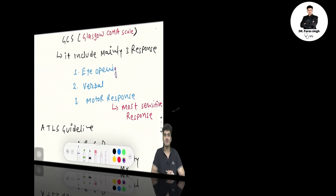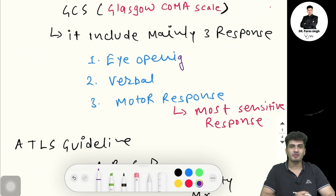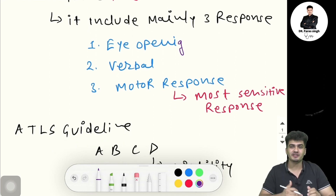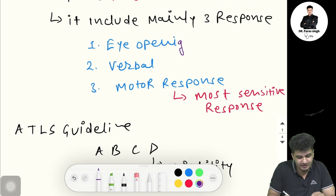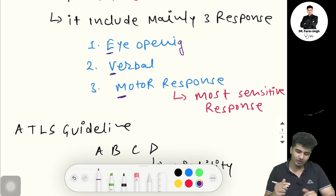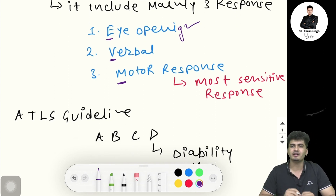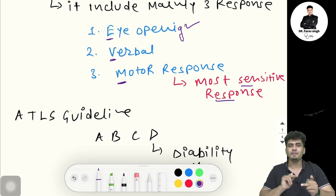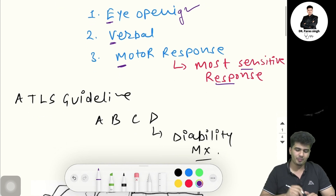The topic is the Glasgow Coma Scale. A very famous mnemonic is EVM: E for eye opening, V for verbal response, and M for motor response. In motor response, you have to take the most sensitive response. We'll learn each one by one.